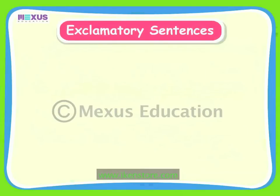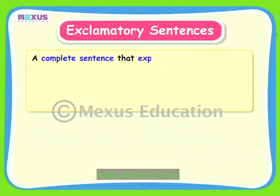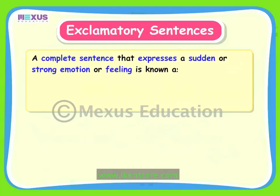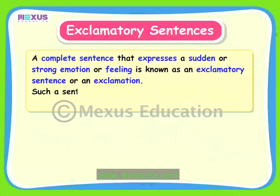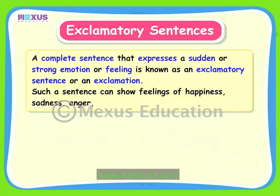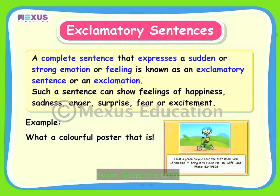A sentence can also show strong feelings. A complete sentence that expresses a sudden or strong emotion or feeling is known as an exclamatory sentence or an exclamation. Such a sentence can show feelings of happiness, sadness, anger, surprise, fear or excitement. Take a look at the following example: What a colourful poster that is! This sentence is an exclamatory sentence as it shows a feeling of excitement.